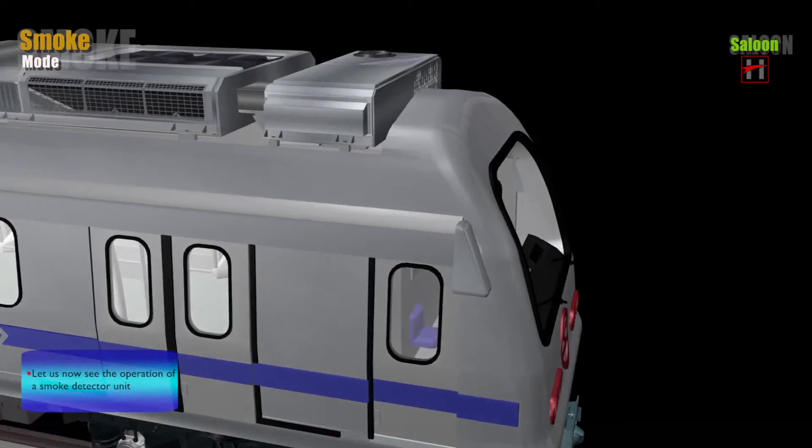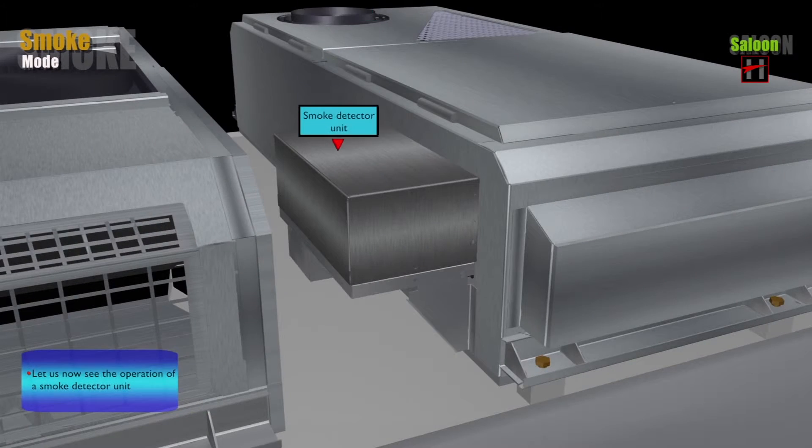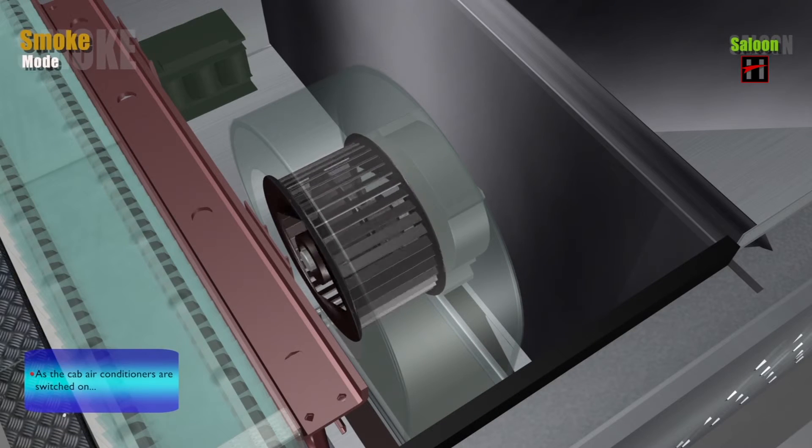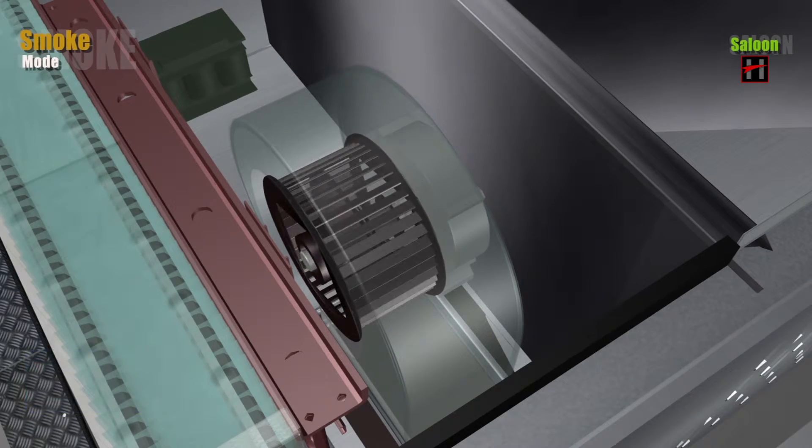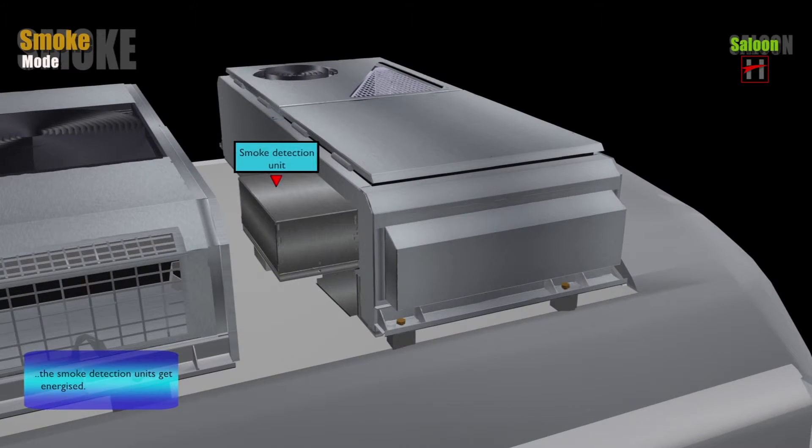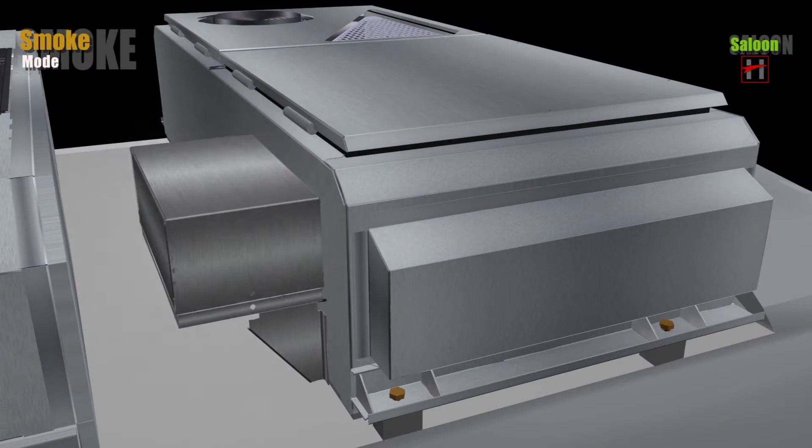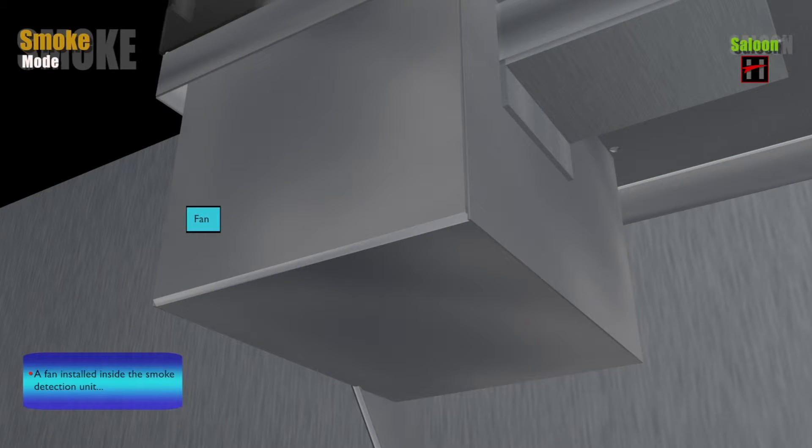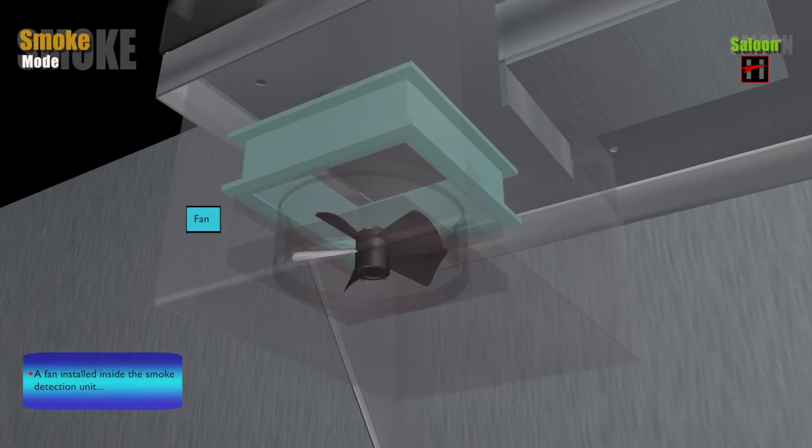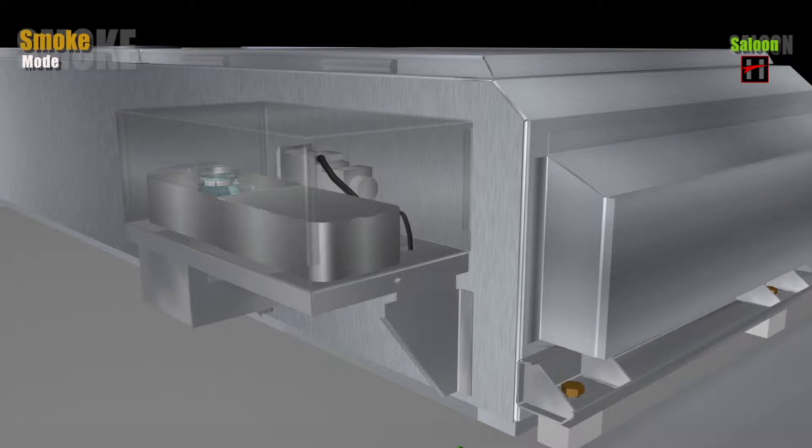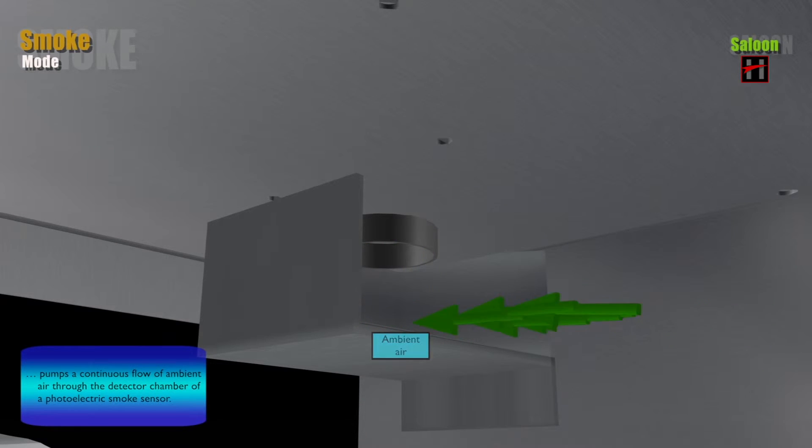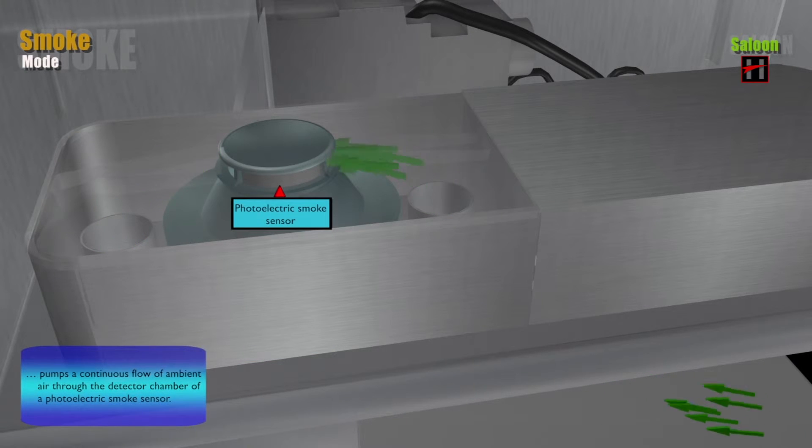Let us now see the operation of a smoke detector unit. As the cab air conditioners are switched ON, the smoke detection units get energized. A fan installed inside the smoke detection unit pumps a continuous flow of ambient air through the detector chamber of a photoelectric smoke sensor.